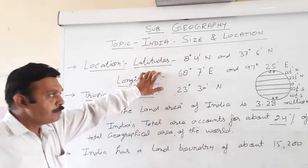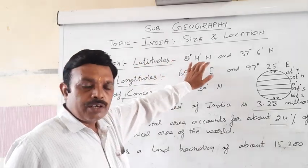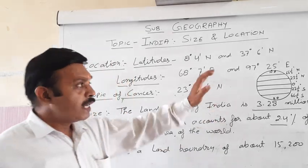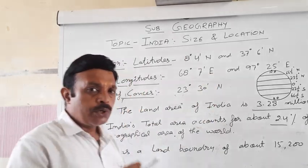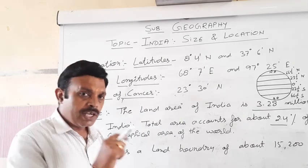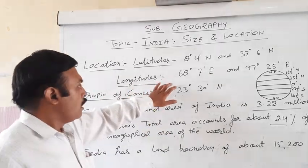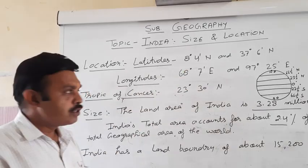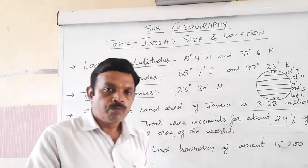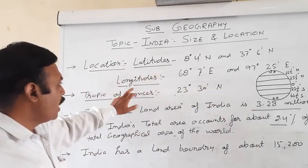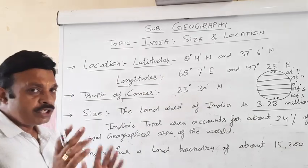India's location according to latitude: the latitude portion is 8 degrees 4 minutes North to 37 degrees 6 minutes North. The longitude is 68 degrees 7 minutes East to 97 degrees 25 minutes East. These are the latitude and longitude coordinates of India — this is the location of India.